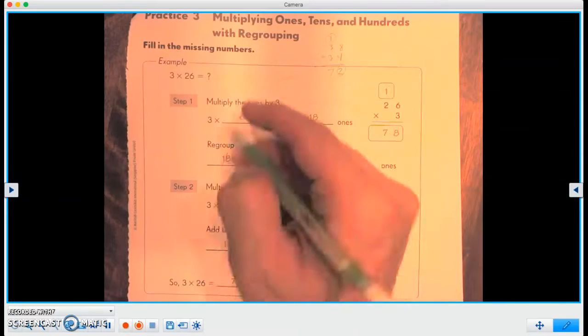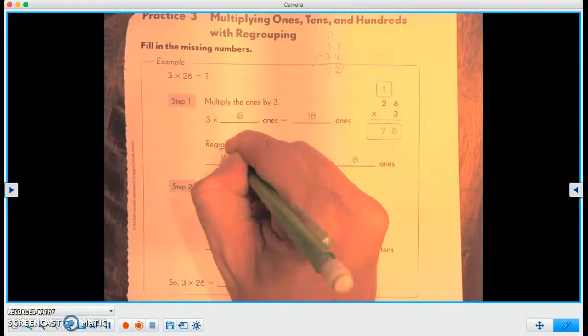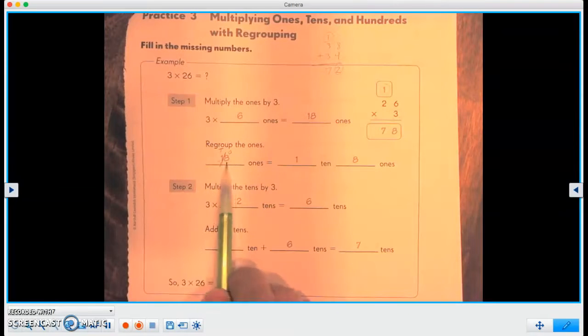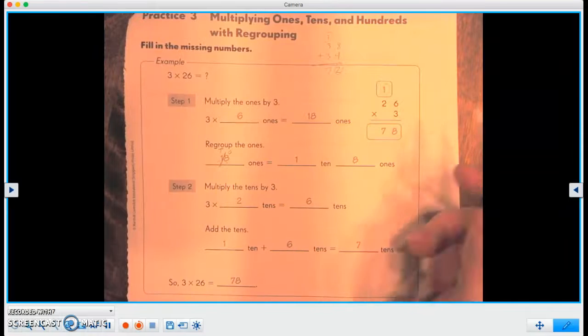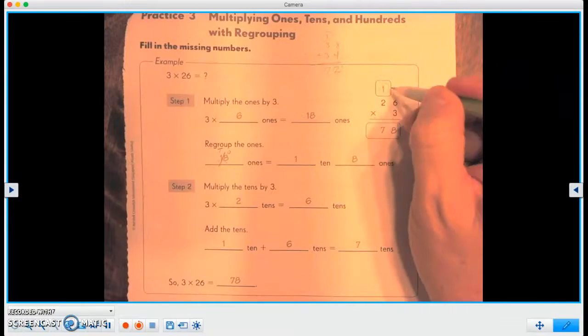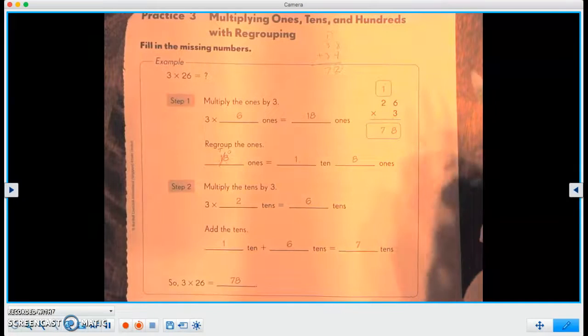And then we're going to regroup the ones. And we have a tens column and a ones column there. So we have one ten, and we have eight ones. On our problem over here, we write down the eight underneath the ones column. And then we're going to add the one above the tens column.